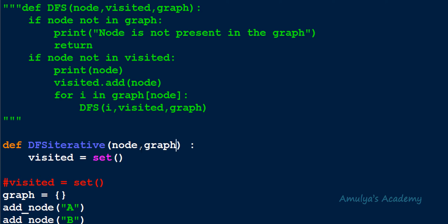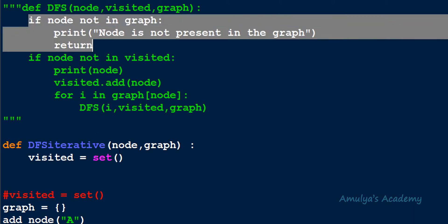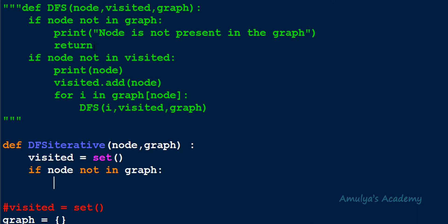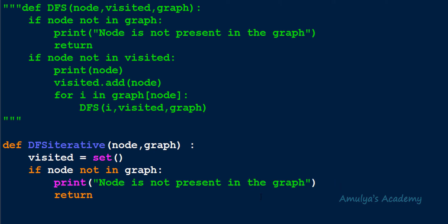Since we're performing traversal on the graph, we also need to pass the graph as a parameter. If you define the visited set outside the function, pass it as a parameter too. Next, like in the recursive approach, we check whether the given starting node is present in the graph. If it is not present, we print a message saying the node is not present and use return to exit the function.